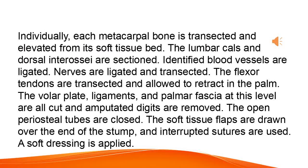Individually, each metacarpal bone is transected and elevated from its soft tissue bed. The lumbricals and dorsal interossei are sectioned. Identified blood vessels are ligated. Nerves are ligated and transected. The flexor tendons are transected and allowed to retract in the palm. The volar plate, ligaments, and palmar fascia at this level are all cut and the amputated digits are removed. The open periosteal tubes are closed. The soft tissue flaps are drawn over the end of the stump and interrupted sutures are used. A soft dressing is applied.